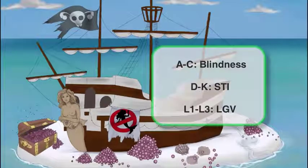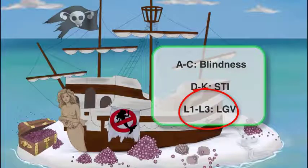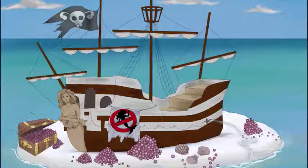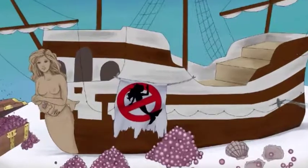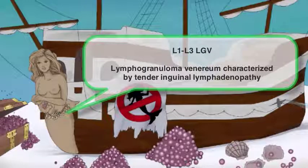Our next subgroup of Chlamydia trachomatis is serovars L1 to L3, and this causes lymphogranuloma venereum, or LGV. This is known as an STD as well, but less common than D through K. LGV is an infection of the lymphatics, specifically of the inguinal nodes. It starts out with a painless genital ulcer similar to syphilis, but weeks to months later it presents as tender lymphadenopathy with draining lymph nodes. We'll demonstrate this in the sketch by having a mermaid with several barnacles around the inguinal region.